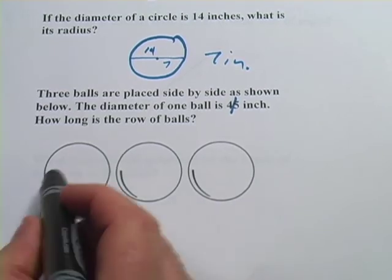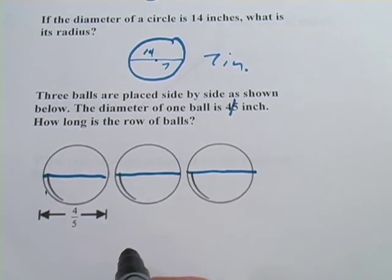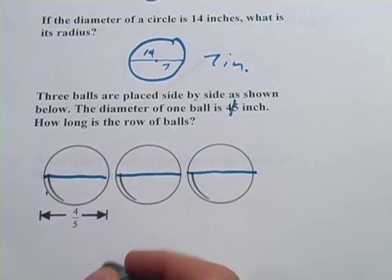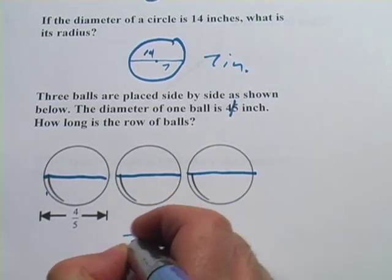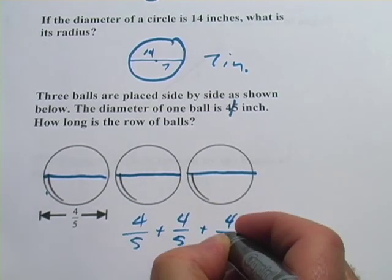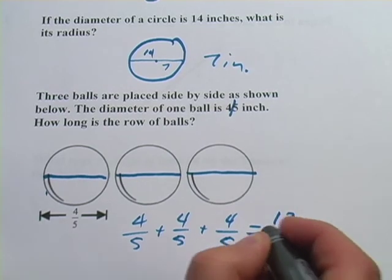So what we really need to do is add this diameter to this diameter to this diameter. The diameters are all 4 fifths of an inch. So really, this problem is 4 fifths plus 4 fifths plus 4 fifths. And when we're adding fractions, we need to first make sure that the denominator, the number on the bottom, that the denominators are all the same. They are. So when that's the case, you can add across the top. 4 plus 4 plus 4. That's 12 fifths.